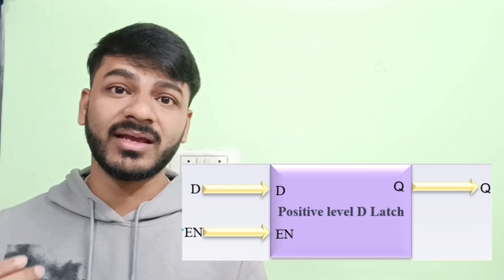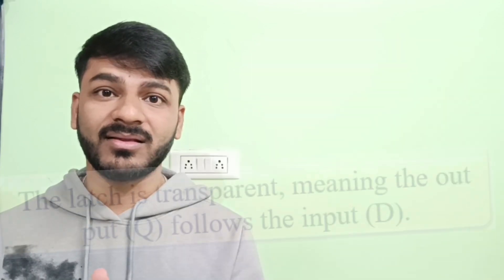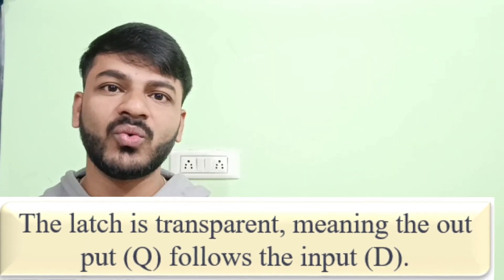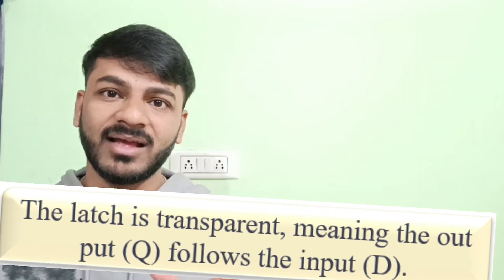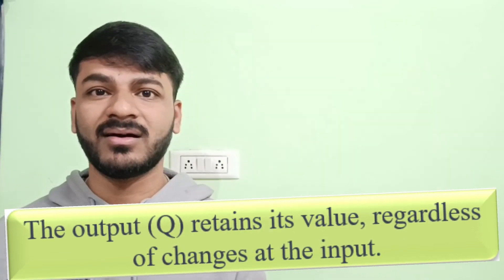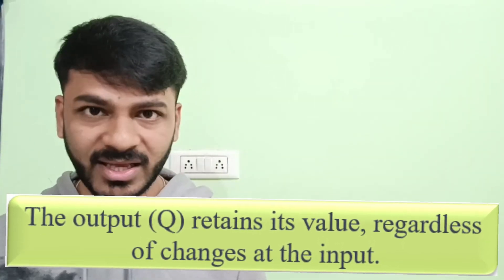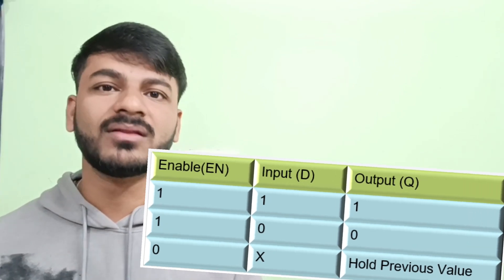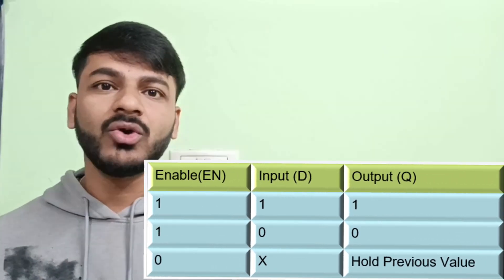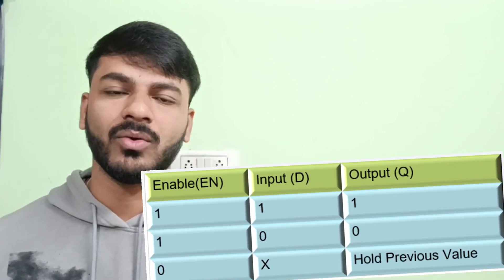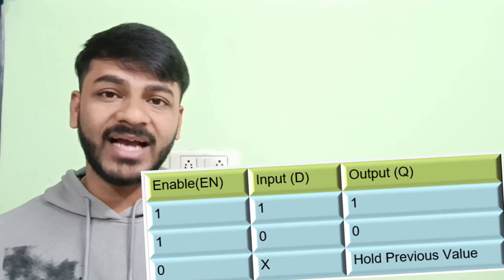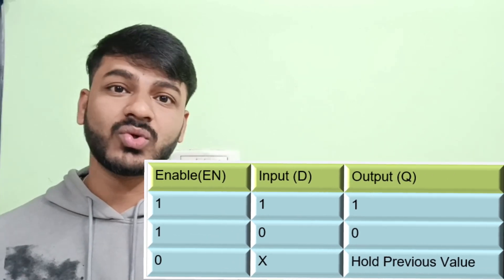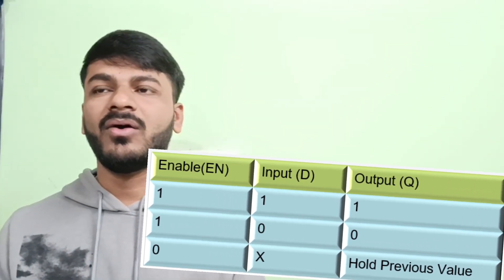The functionality says that if input Enable is high, then the latch will act as a transparent — that means Q will hold the current value of D. Similarly, when Enable is low, it will ignore the input D and it will hold the previous value of Q. The truth table also confirms that when Enable is high, whatever the value of D — either zero or one — Q will store that value. But when Enable is low, the latch will ignore the current value of D and store the previous value of Q.